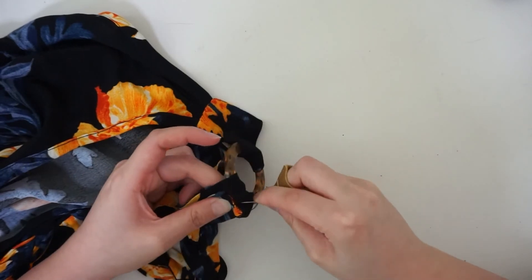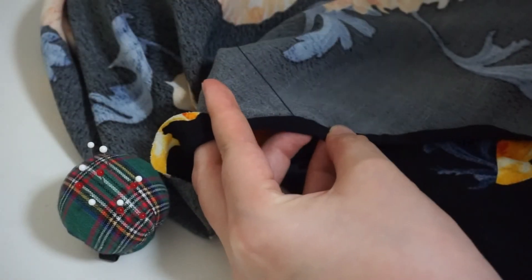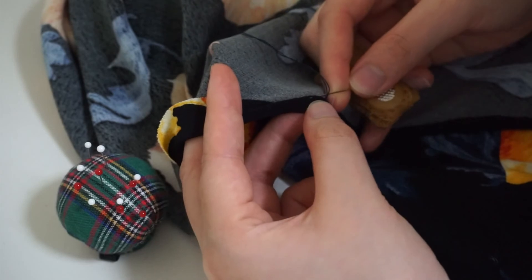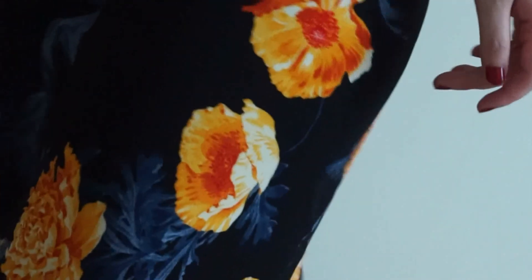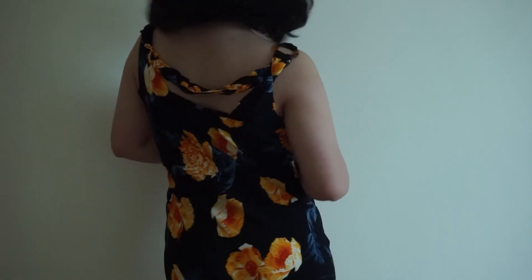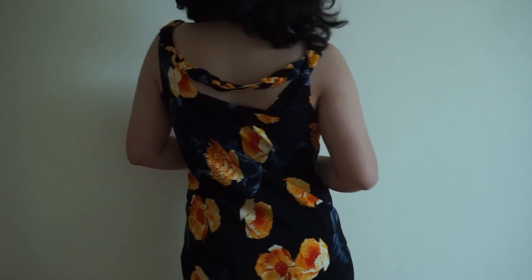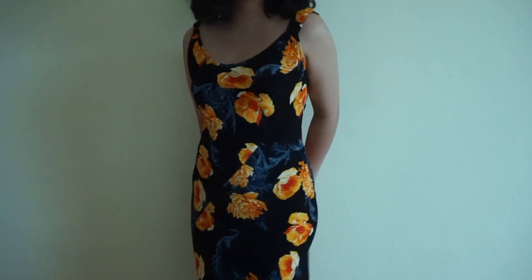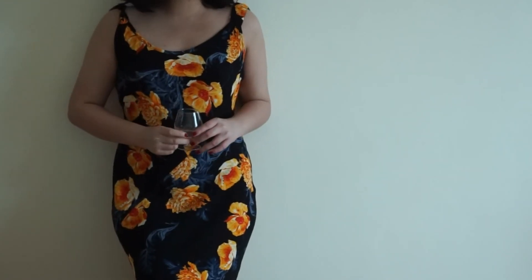Finally, I finished the hem with hand stitched rolled hem. You can totally finish the hem with a machine, but I just like the invisible look of a hand stitched hem. And after hemming, our dress is finally complete. Thank you.